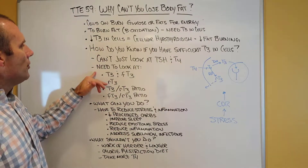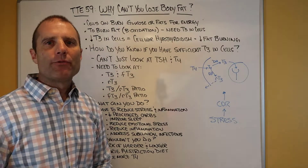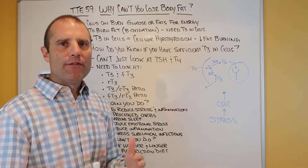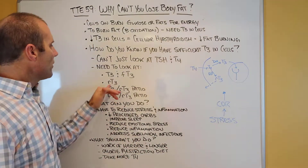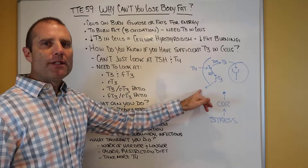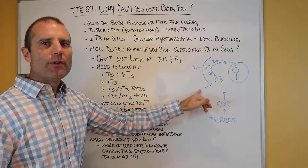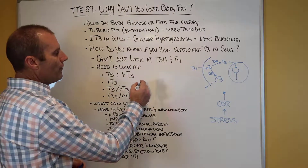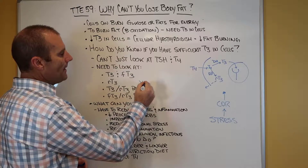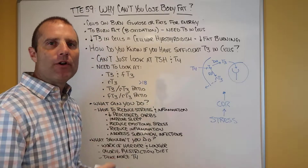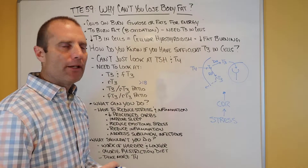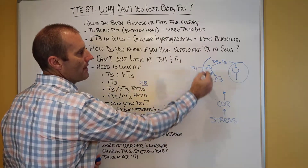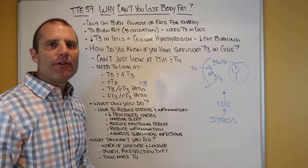So what can you do? You want to look at T3 and free T3 levels — we want to make sure we're converting some of that T4 to T3. We want to look at reverse T3, because if we see elevations of reverse T3, then we have a good indication that this process is going on. If reverse T3 is greater than 18 — which is the high end of the functional range, it could be as high as 24 — there's a good indication that you have cellular hypothyroidism.